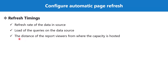Lastly, it's common that report viewers are in one region while the capacity is hosted in another, so there may be some latency in data transmission due to that geographic difference. Now let's go back to Power BI and explore the same process for change detection.